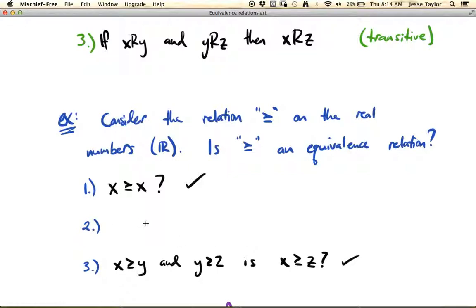But what about symmetric? So if X is greater than or equal to Y, is Y greater than or equal to X? No. So because this fails the symmetric condition, condition number two, this is not an equivalence relation. So it is reflexive, it is transitive, but it's not symmetric.